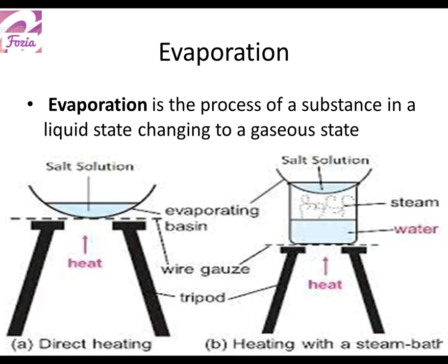The next method is evaporation. Evaporation is the process by which we can separate a liquid into a gaseous state. When we heat a liquid, it turns into gas or vapors. So evaporation will be the method by which we can separate dissolved solids from water. Suppose we have a mixture of salt and water, where the salt is dissolved. I cannot separate it by filtration because it is not insoluble like sand.